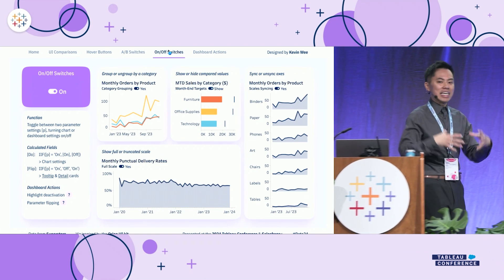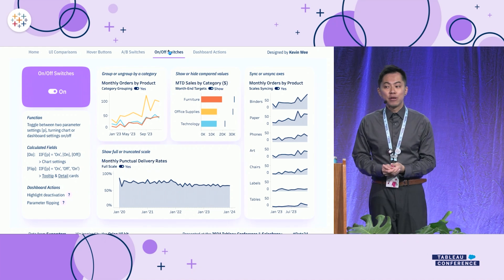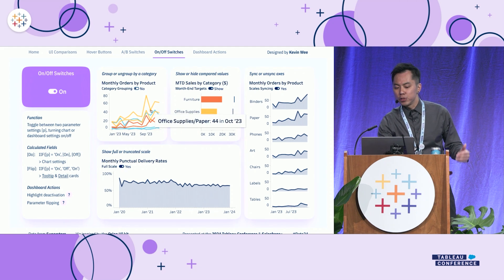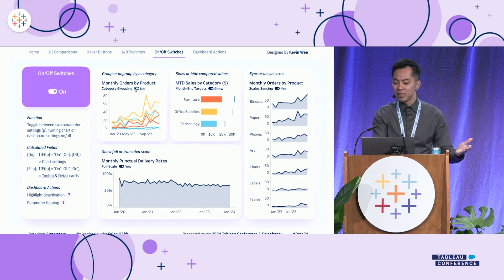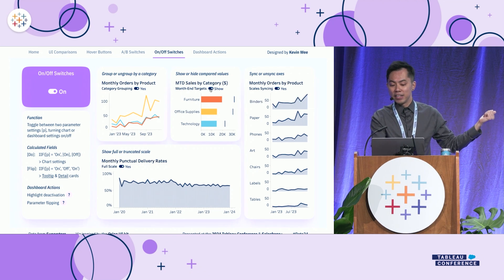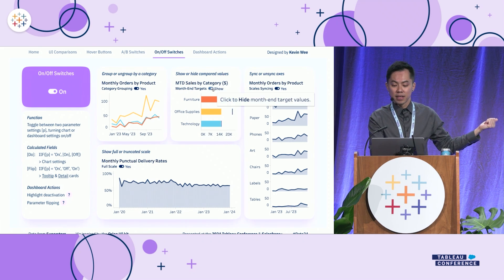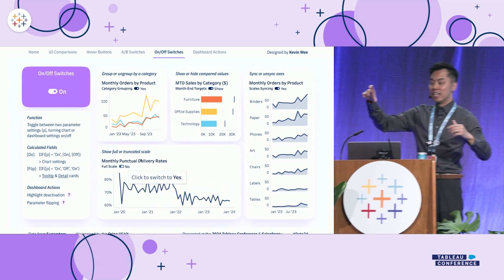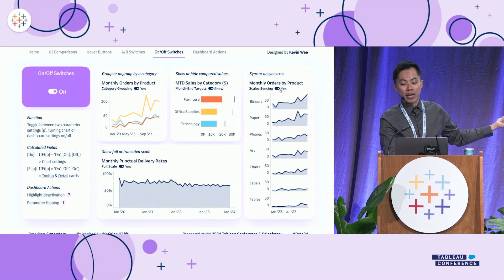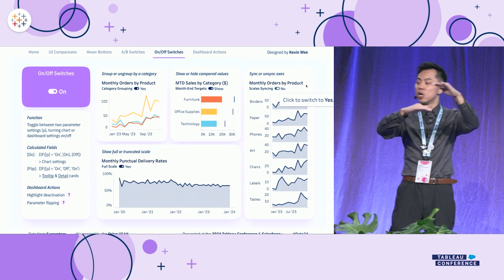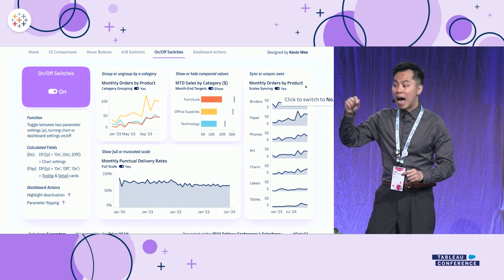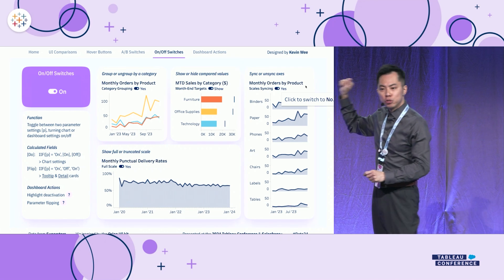Regarding the on-off switch, there are many things in a dashboard you can turn on and off. First, you can group or ungroup line charts — when ungrouped, hovering shows both category and subcategory products; when grouped, it shows only the category total. You can also show and hide different target values so you can read the existing bars more clearly. You can toggle between different scales — truncated scale or full scale. And if you can control one chart's scale, you can control multiple scales simultaneously, choosing whether to sync or unsync them.